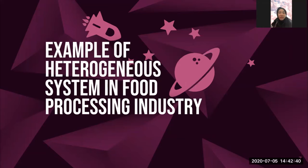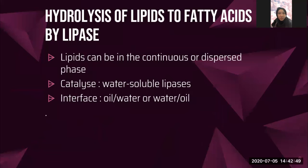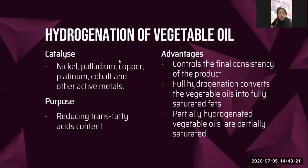Next are examples of heterogeneous systems in the food processing industry. First is hydrolysis of lipids to fatty acids by lipase. Lipase can be in continuous or dispersed phase, and we use water-soluble lipase as the catalyst, which adsorbs at the oil-to-water or water-to-oil interface. Second is hydrogenation of vegetable oil. For hydrogenation, active metals such as nickel, palladium, copper, platinum, and cobalt are used, with nickel being the most common.